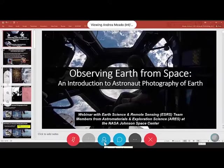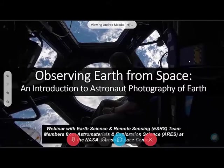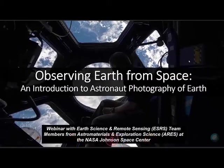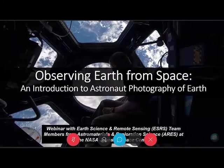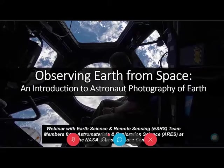Today, Andy and I are going to talk about observing Earth from space — this is a basic introduction to astronaut photography of Earth. We work within the Earth Science and Remote Sensing Unit at Johnson Space Center. Part of our daily job is to work with all of the photos that astronauts take of Earth and use them in a variety of ways and spread that information out so that it's all publicly available.